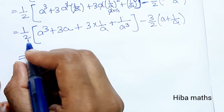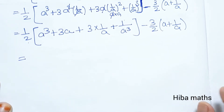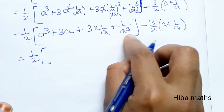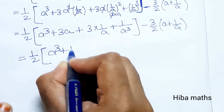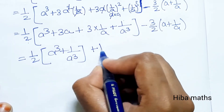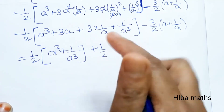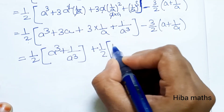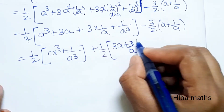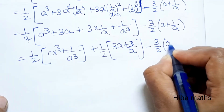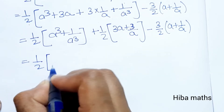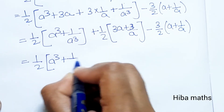In the full term, 1/2 is common. Taking 1/2 as common, we get 1/2 times (A cube plus 1/A cube) plus 1/2 times (3A plus 3/A) minus 3/2 times (A plus 1/A). The 3A and 3/A terms cancel, leaving 1/2 (A cube plus 1/A cube).